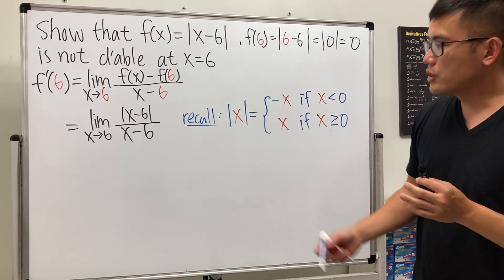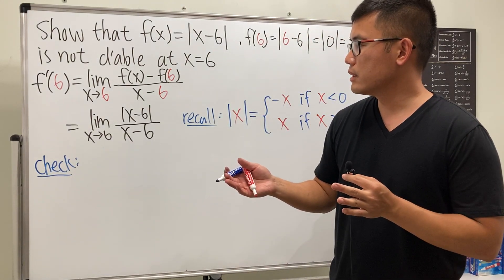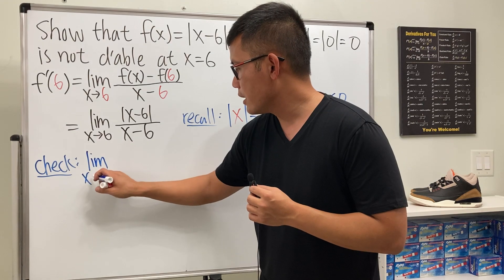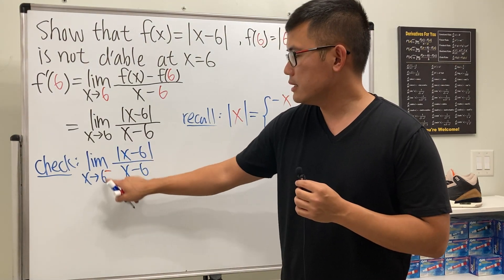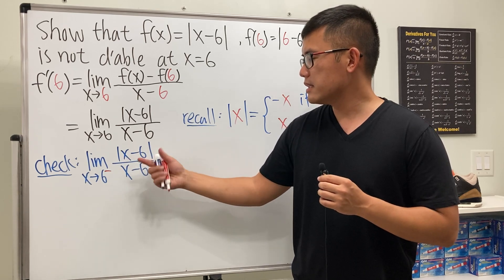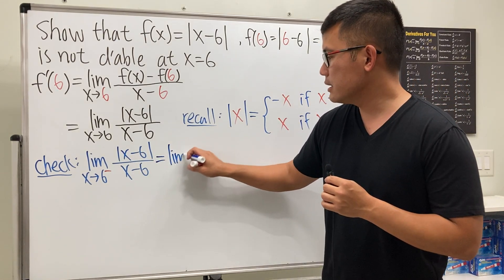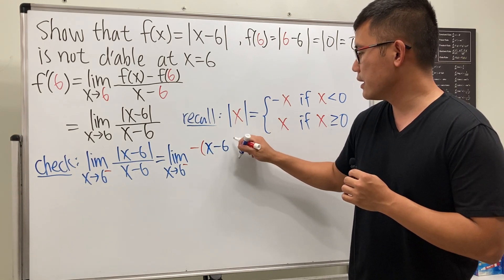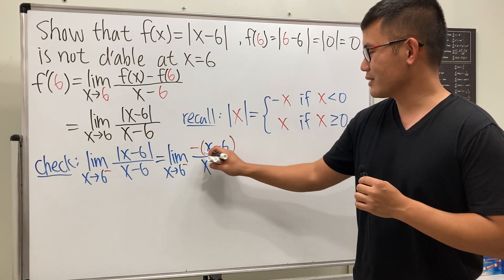We're going to check the limit as x approaches 6 from the left-hand side and also from the right-hand side. For the left-hand side, x approaching 6 from the negative direction means x is a little bit less than 6 — think of 5.99 minus 6 — that gives a negative result inside. So we negate the expression: the limit as x approaches 6 from the left is negative (x minus 6), all over x minus 6.